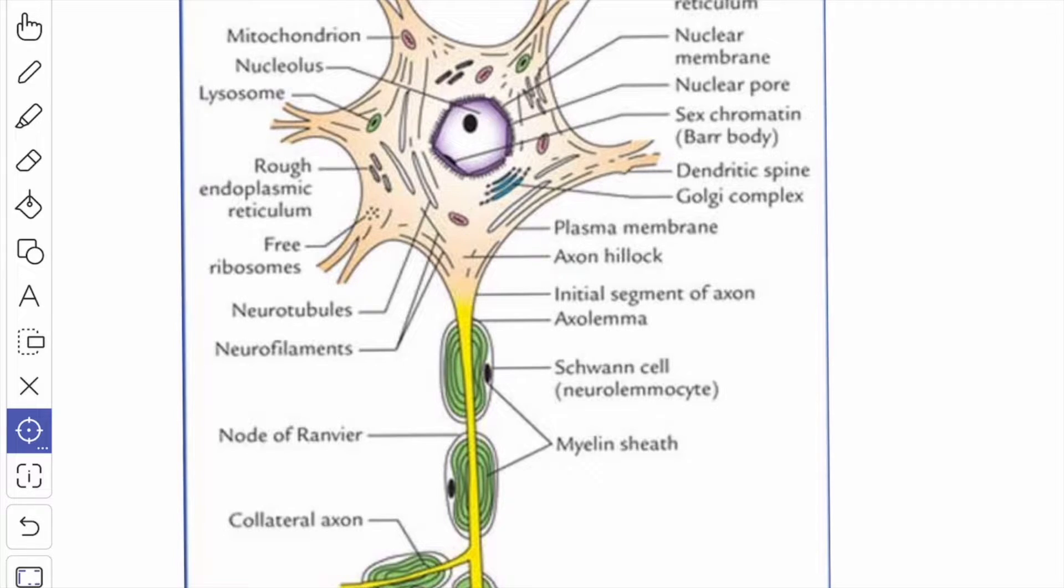This helps in the transmission of neurochemical substances and breaks up into synaptic vesicles at the terminal ends of the axons. The next structure we will see in the cytoplasm is the mitochondria.